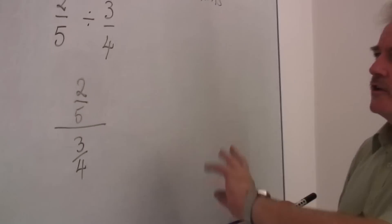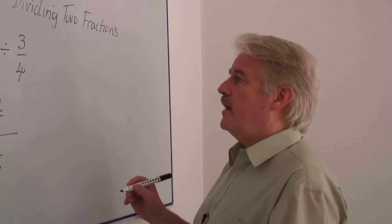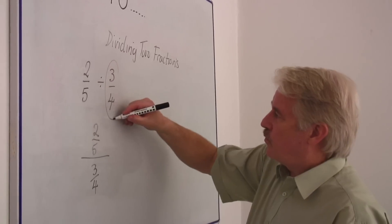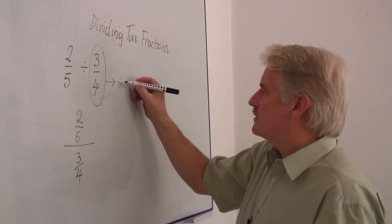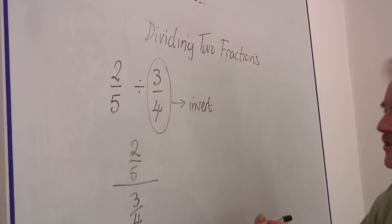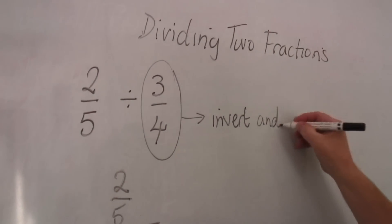But what I actually do, I invert and multiply. Now when I say I invert, the one I'm dividing by, I invert, and invert means turn it upside down, and multiply.